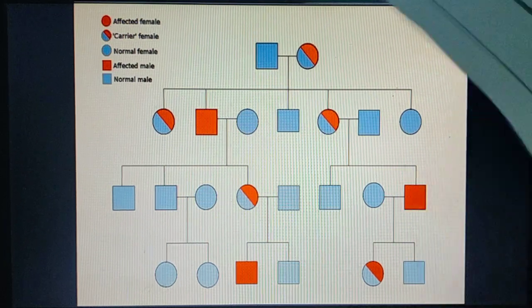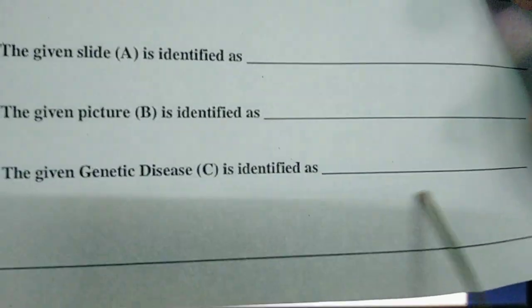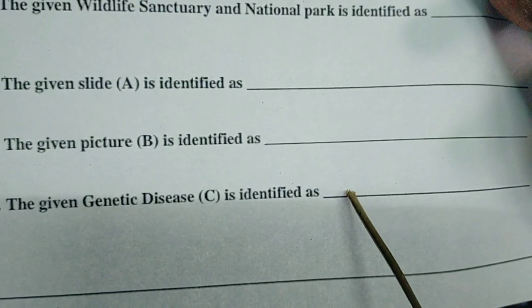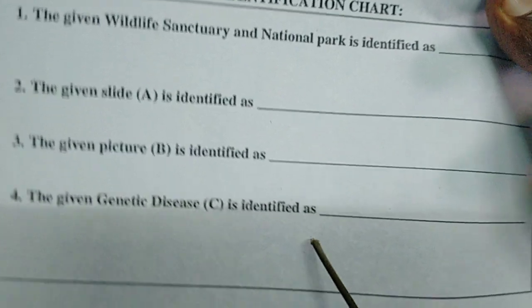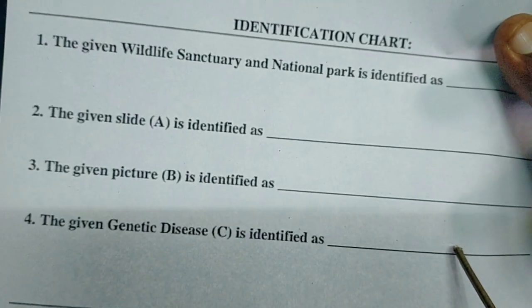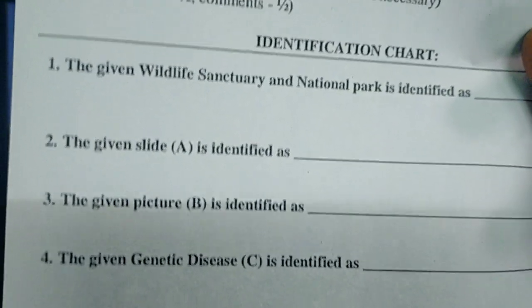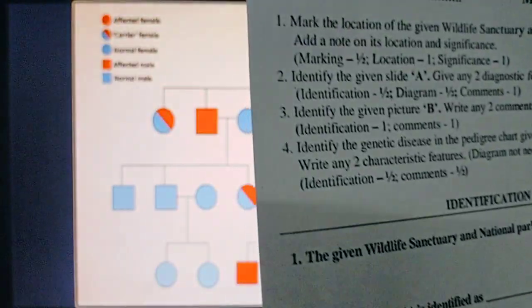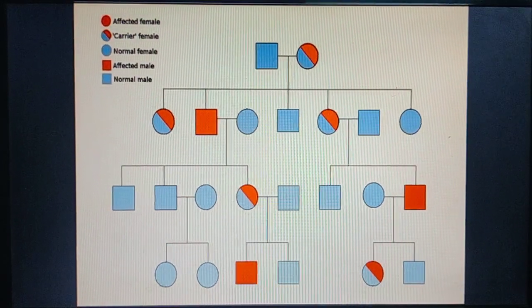Whatever picture is shown, identify it correctly. If it is hemophilia, write 'Genetical Disorder — Hemophilia.' If it is sickle cell anemia, write 'Genetical Disorder — Sickle Cell Anemia.' This is what you should follow.